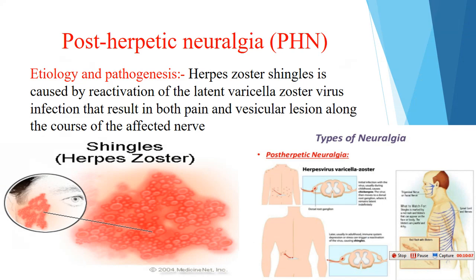Another neuralgia is post-herpetic neuralgia. Its pathogenesis relates to herpes zoster (shingles), which is caused by reactivation of the latent varicella zoster virus. This results in both pain and vesicular lesions in the skin along the course of the affected nerve. The majority of this disease lasts for one month and then the pain disappears. If it persists beyond one month — possibly for years — it is called post-herpetic neuralgia.